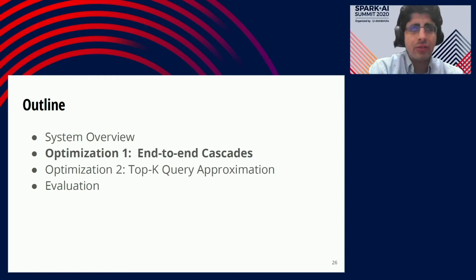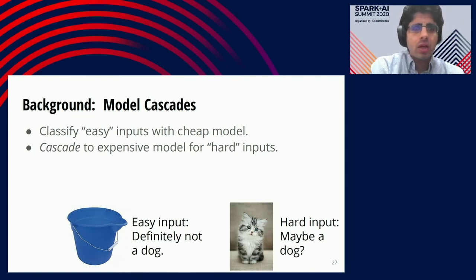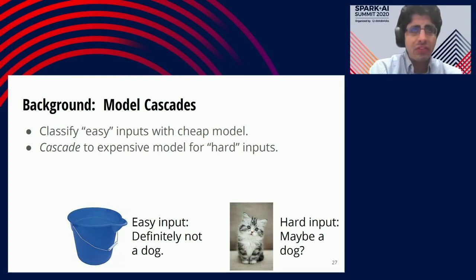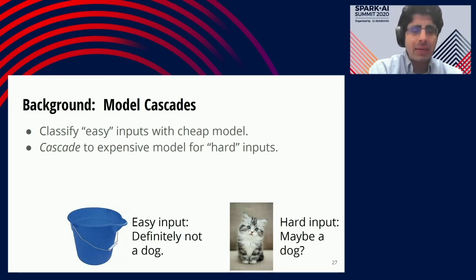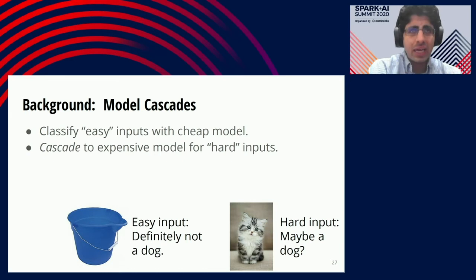Now I want to talk about the first of Willump's statistically aware optimizations: the end-to-end Cascades optimization, which maximizes the performance of classification workloads. The high-level idea behind Cascades is that most classification workloads contain a mixture of easy and hard data inputs. An easy data input can be accurately classified by a computationally cheap model, but a hard data input requires a more expensive model. The idea is that you can use a cheap model to identify and classify easy data inputs, then cascade the others — the hard inputs — to a more powerful model.